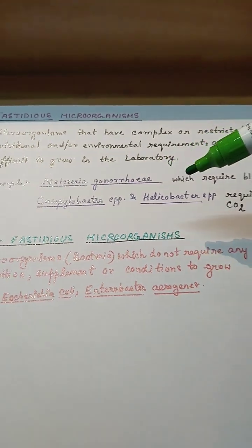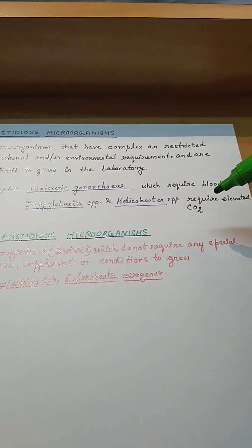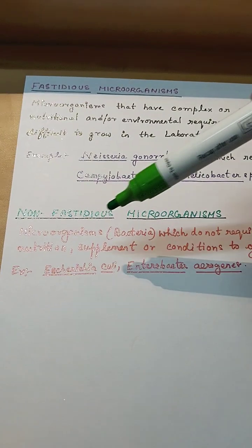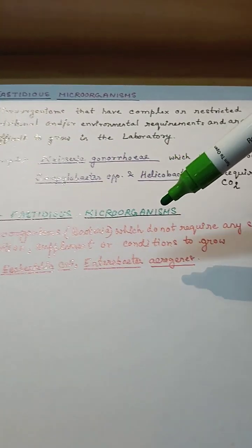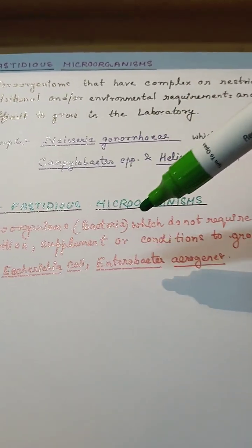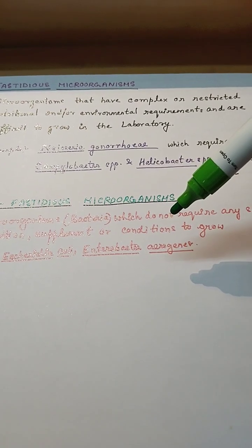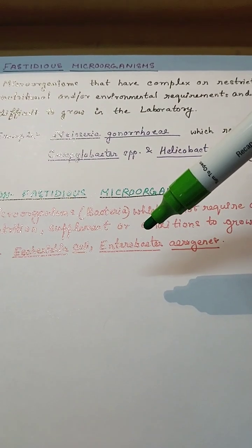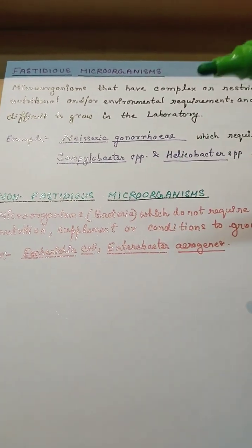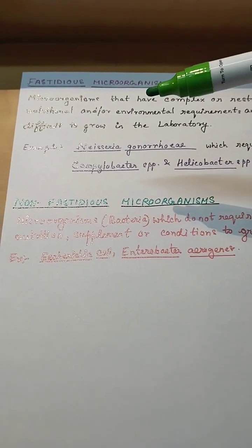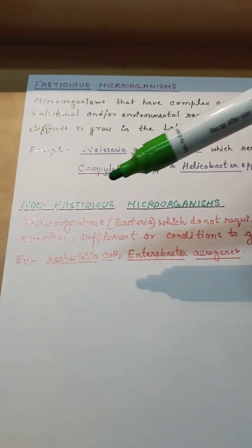Helicobacter species require elevated CO₂. Non-fastidious microorganisms are bacteria which do not require any special nutritional supplement or condition and are easy to grow under any condition. Examples include Escherichia coli and Enterobacter aerogenes. In summary, fastidious microorganisms require a special type of environment, while non-fastidious microorganisms do not.